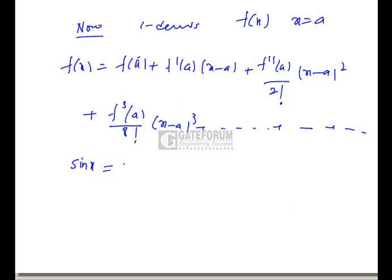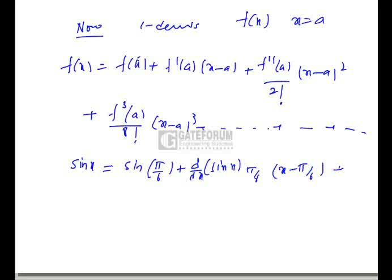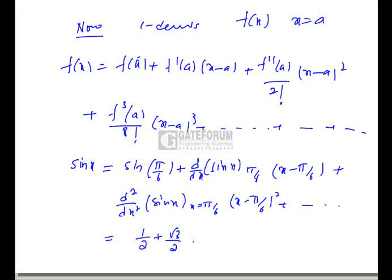For f(x) equals sin(x) with a equals π/6, the expansion is: sin(x) equals sin(π/6) plus the derivative of sin(x) at π/6 times (x minus π/6) plus the second derivative of sin(x) at π/6 divided by 2 times (x minus π/6)² and so on. This simplifies to 1/2 plus (√3/2)(x minus π/6) minus (1/4)(x minus π/6)² plus ..., which is option 1.